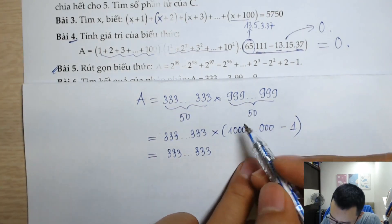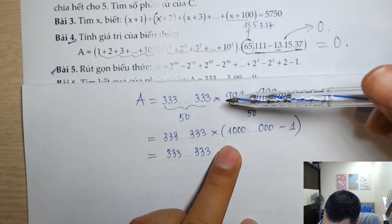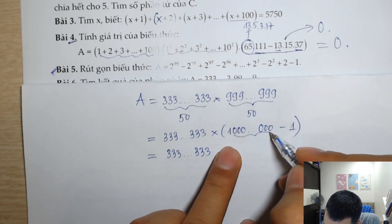À, chỗ này bao nhiêu chữ số 0? Chúng ta thấy đây là 50 chữ số 9, thì chỗ này sẽ có 50 chữ số 0.